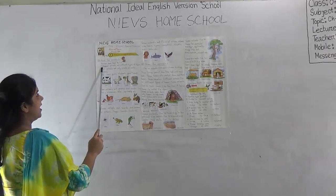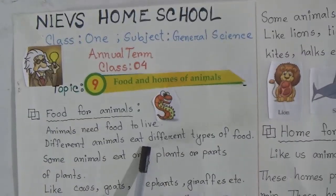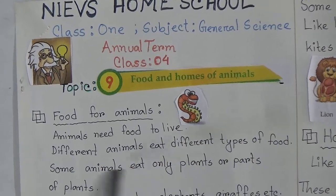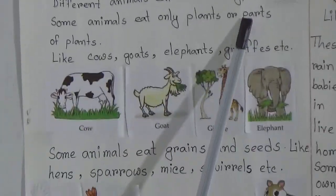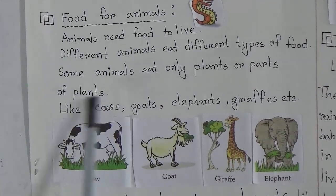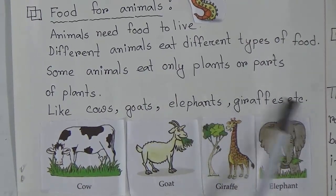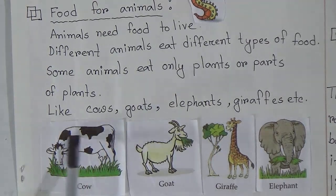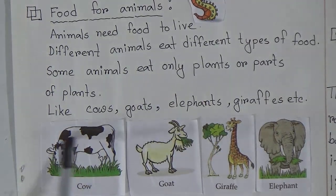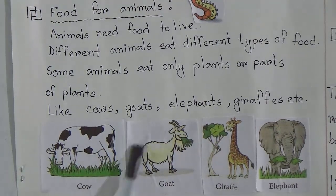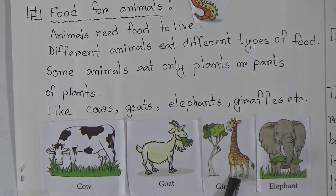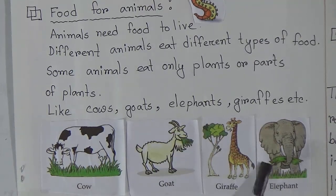Our first point is food for animals. Animals need food to live. Different animals eat different types of food. Some animals eat only plants or some parts of plants, like cows, goats, elephants, and giraffes. Look, here is a picture of a cow eating grass. The goat, giraffe, and elephant are also eating parts of plants.